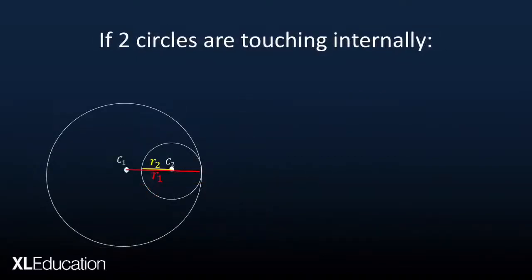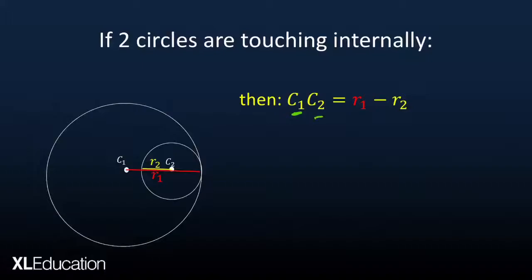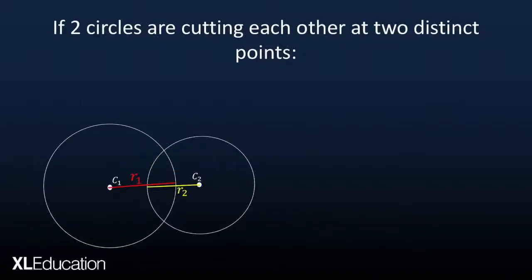The next situation is when two circles are touching internally. We have a bigger circle with center C1 and a smaller circle with center C2. The relationship is that the distance from center 1 to center 2 must equal the difference between radius 1 (the bigger circle) minus radius 2 (the smaller circle). When these are equal, the two circles are touching internally.